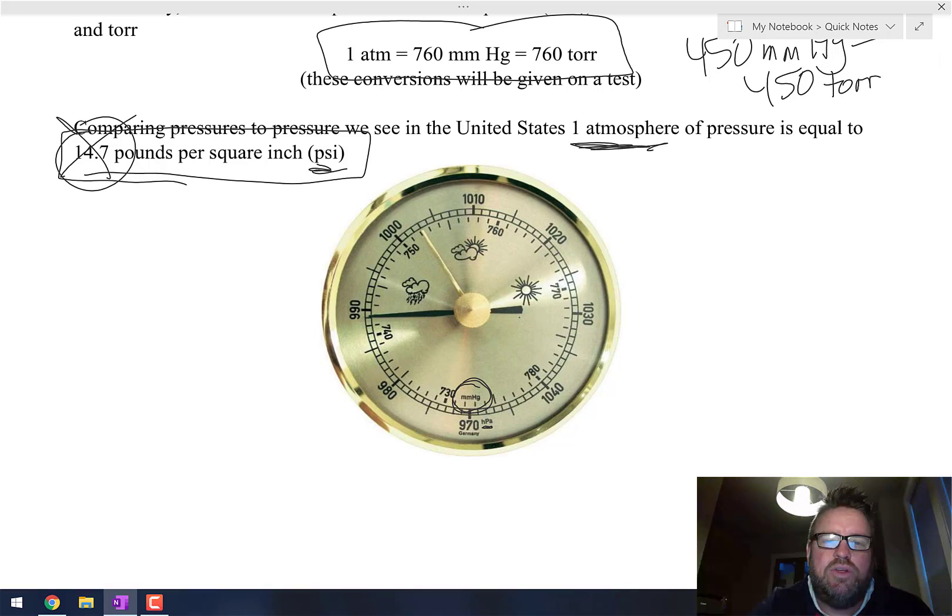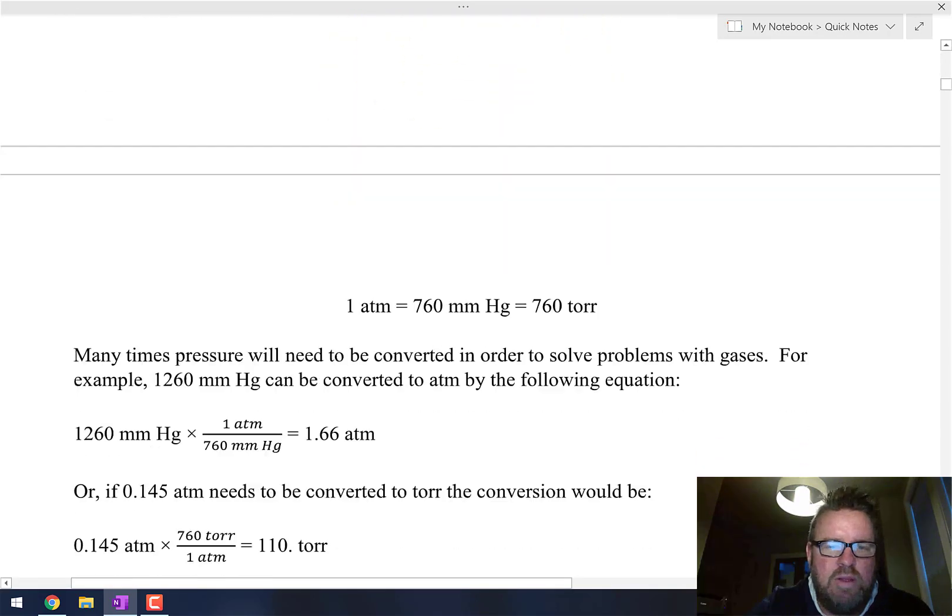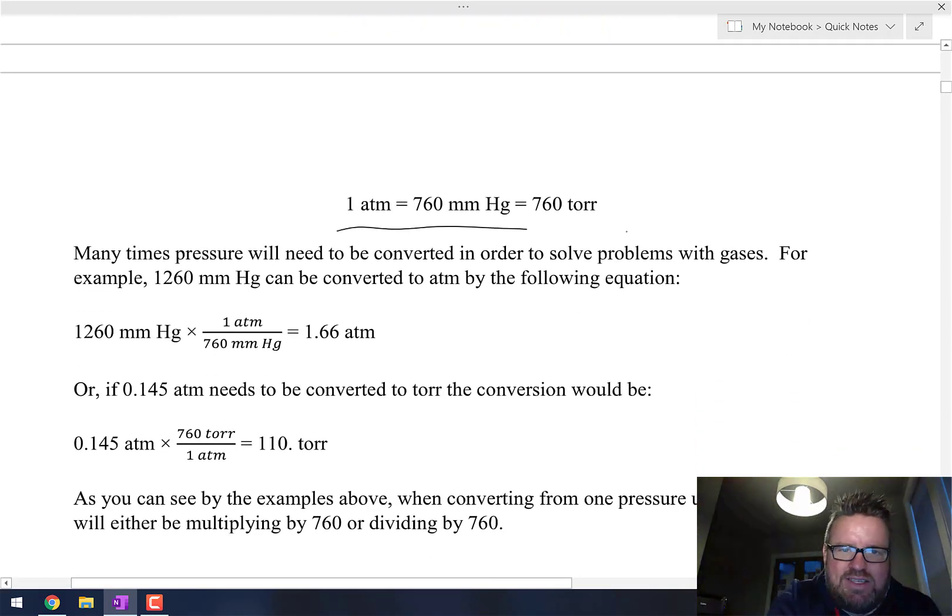On a test I'm going to give you this and you're going to have to convert from one thing to something else. For example, if I give you 1260 millimeters of mercury and I say put that into atmospheres, notice that what I do—this is the same stuff we've been doing all year—I've got millimeters of mercury on top, so I put my millimeters of mercury on the bottom.